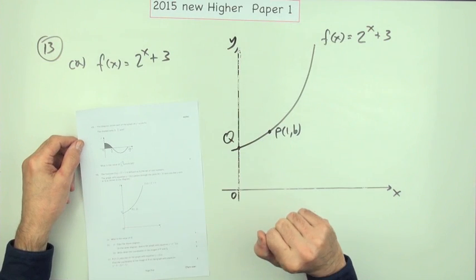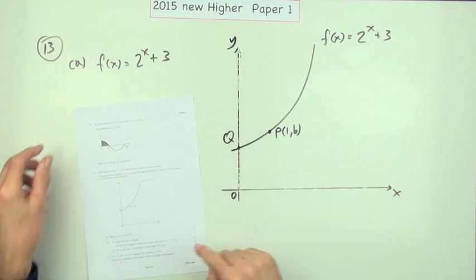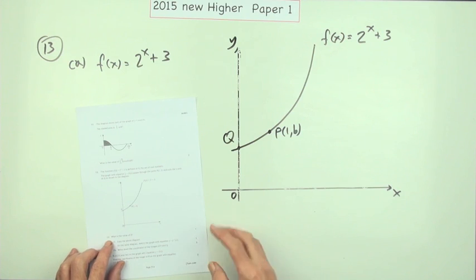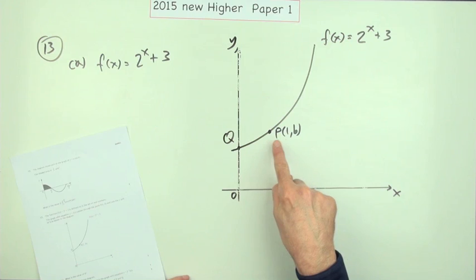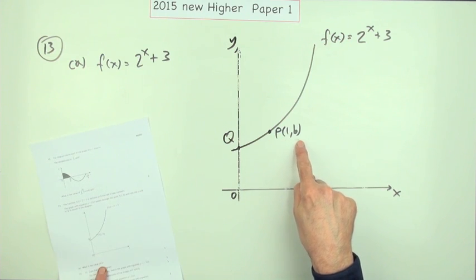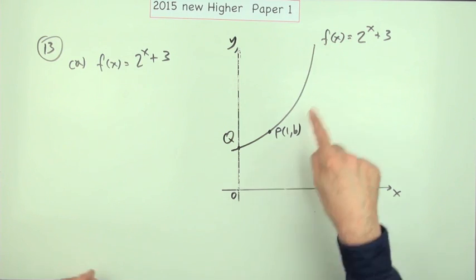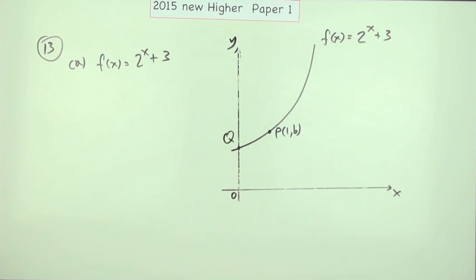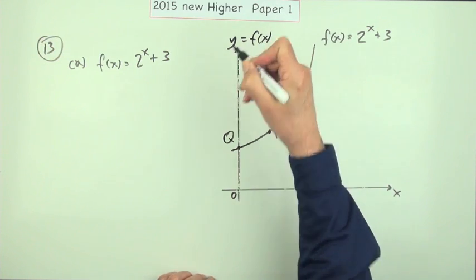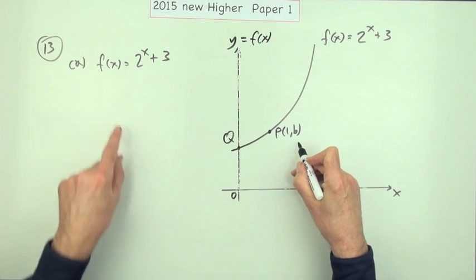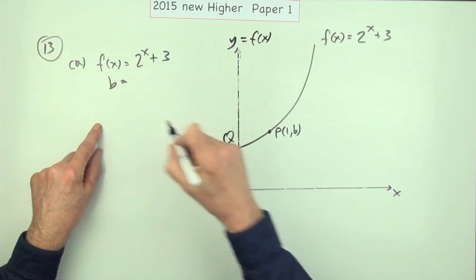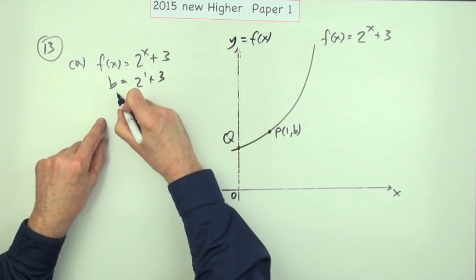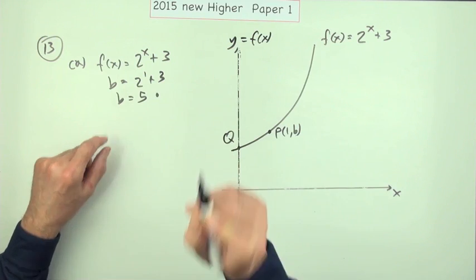Number 13, from the 2015 new hire paper, question one. We have transformations of graphs. Part (a) says: on the original graph you have the point P(1, b) — what's the value of b, for one mark? The equation is y = f(x), so y equals b when x equals 1. That gives 2 to the power 1 plus 3, which is 2 plus 3, so b equals 5. That's one mark.